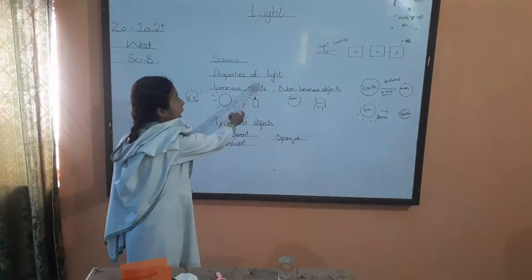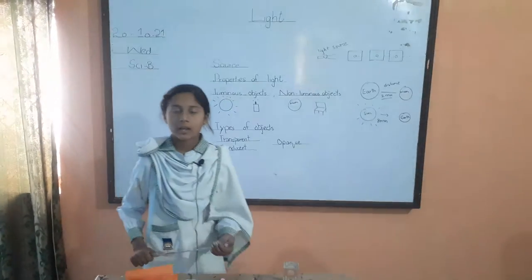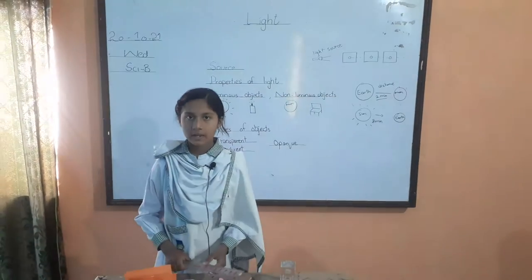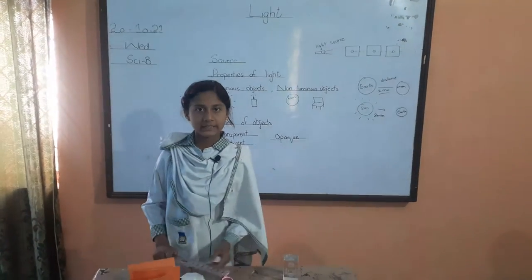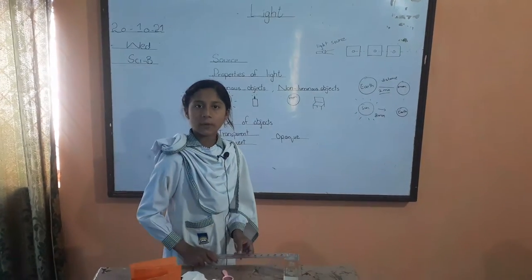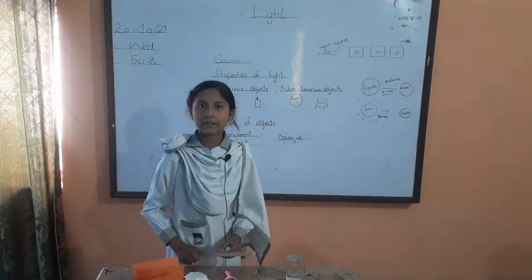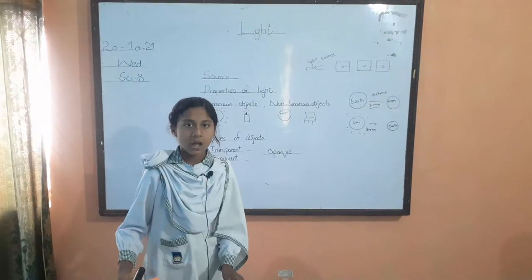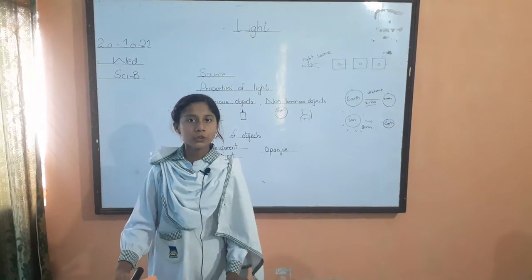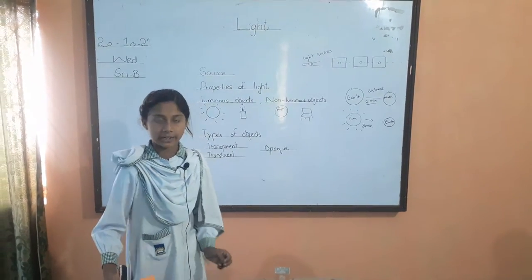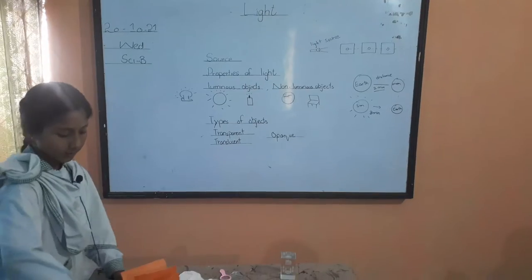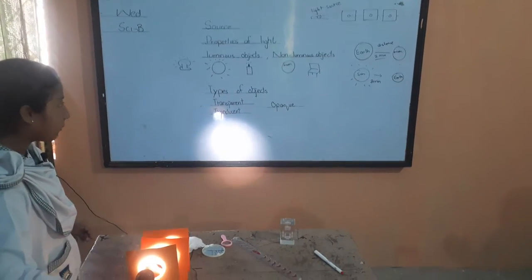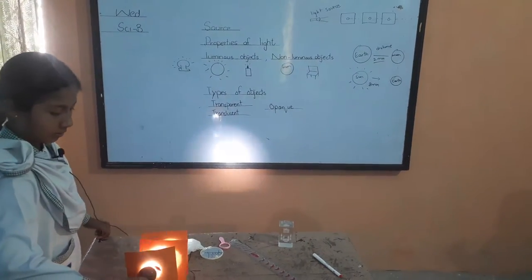Properties of light. Light travels in a straight line. The speed of light is 3 km per second. In one second I prove to you light travels in a straight line. Light passes from this hole.